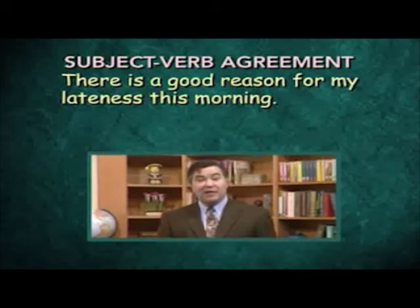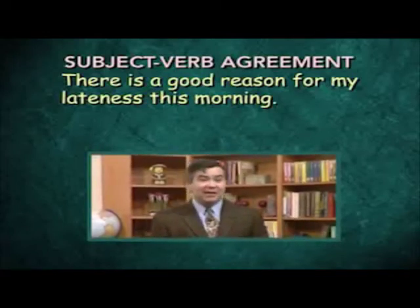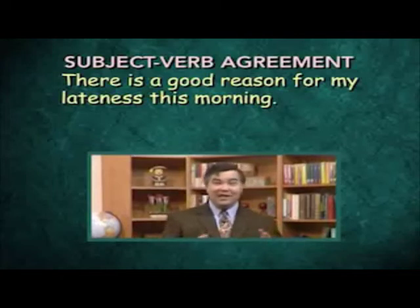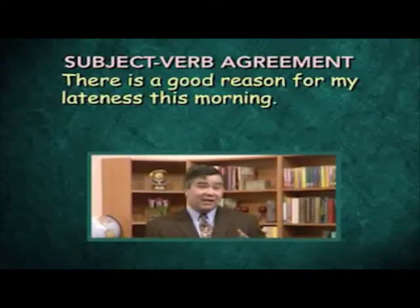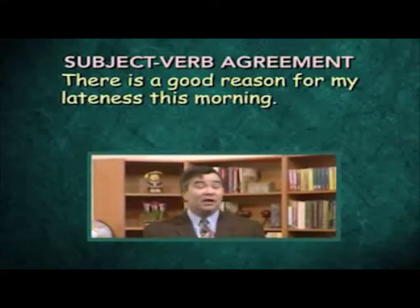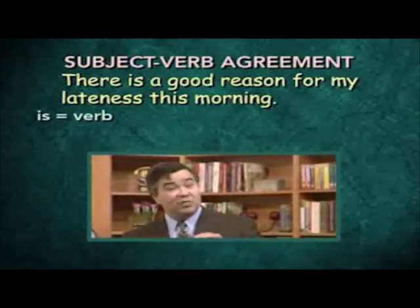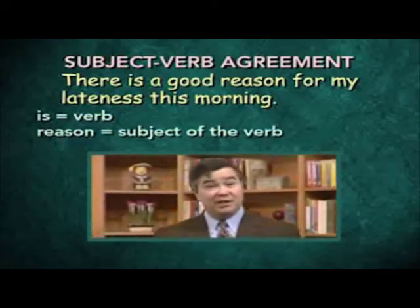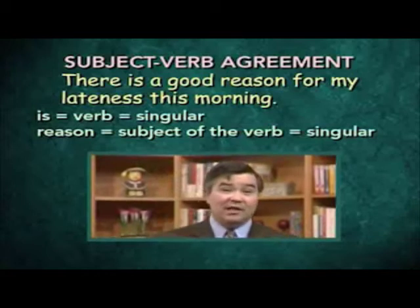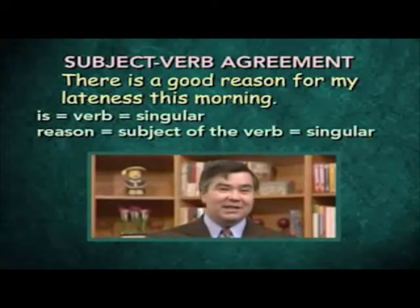One more example: 'There is a good reason for my lateness this morning.' In English, many times we speak or write sentences that begin with 'there is,' 'there are,' 'here is,' 'here are.' You might at first glance think that 'there' or 'here' is the subject, but neither of those is a noun and so they can't really be the subject of the verb. In sentences that begin with 'there' or 'here,' the verb normally precedes the subject — the subject comes after the verb. In this case, the verb is 'is' and what follows — 'reason' — is actually the subject. 'Reason' is singular, so the singular verb 'is' is correct. When a sentence begins with 'there' or 'here,' look after the verb to find the subject and make sure it matches the verb in terms of number — singular or plural.